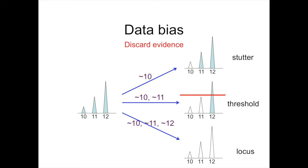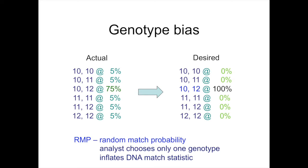A genotype bias occurs when the actual genotype probability distribution is transformed into something simpler or more desirable to reach a particular conclusion. For example, different genotype possibilities — with one main possibility of 10-12 at 75% probability — are just converted into a single 10-12 genotype. This is done in the random match probability (RMP) mixture interpretation method, and the result is to inflate the DNA match statistic by putting 100% weight in the numerator instead of the scientifically correct 75%.